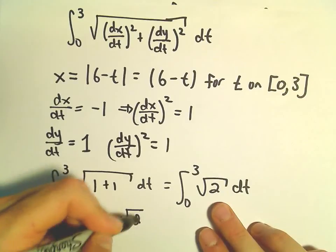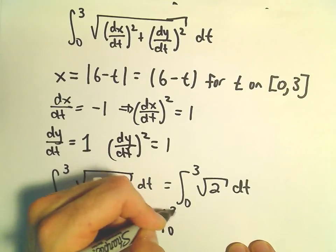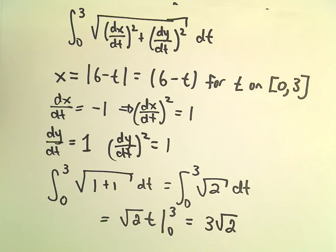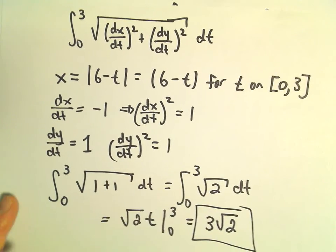So when we integrate, we'll get the square root of 2 times t. We'll have to evaluate that from 0 to 3. And that's just going to leave us with 3 root 2 minus 0. So our arc length will simply be 3 times the square root of 2.